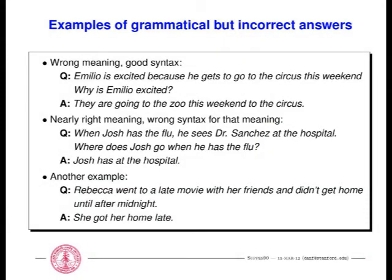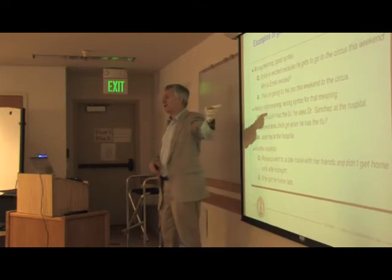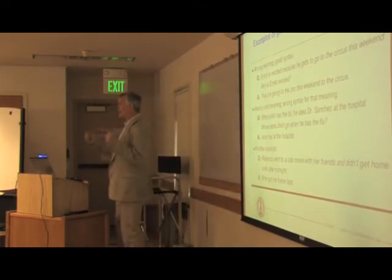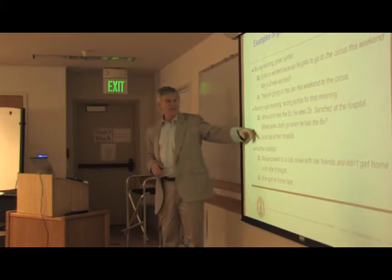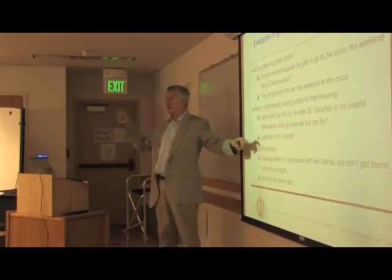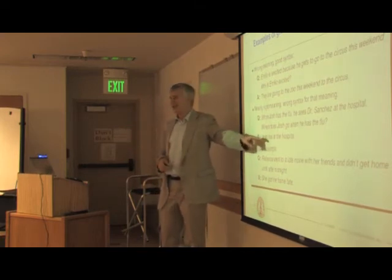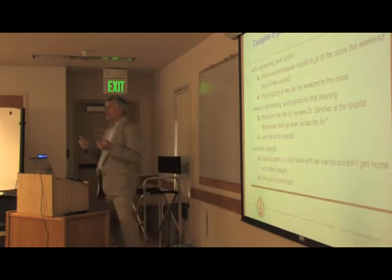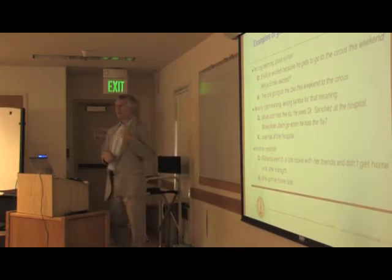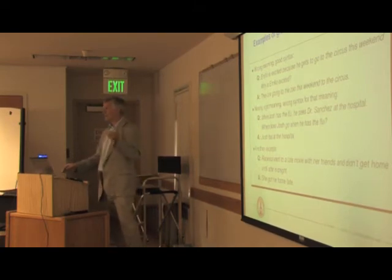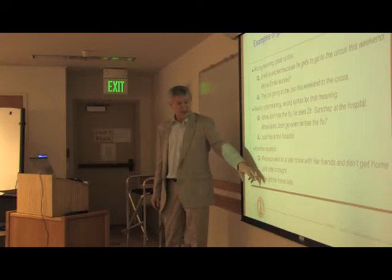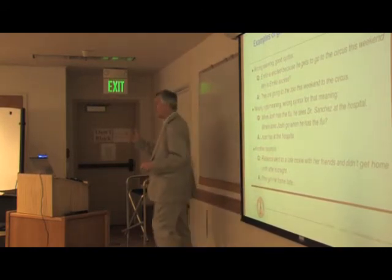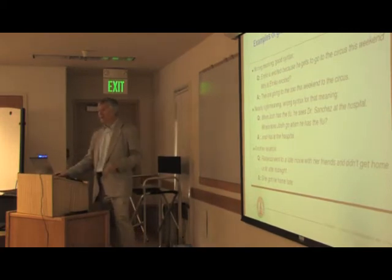The problem of grammatical but incorrect answers — I can't just let everything go through. If the student says 'they're going to the zoo this weekend, to the circus' — that's the kind of way we talk, but that's not what I want the student to write. Was it to the zoo or to the circus? One answer is right, one answer is wrong. If they say 'where does Josh go when he has the flu?' — the student doesn't see 'goes' in the word list because we didn't give them that word. So they make do with 'Josh has at the hospital.' That's not the right answer. Likewise, 'what happened to Rebecca after the movie?' — 'she got home late' is what we want them to write, but 'she got her home late' is a different sentence — same vocabulary, just not the right answer to the question.